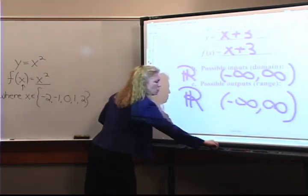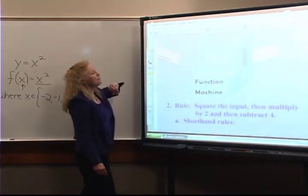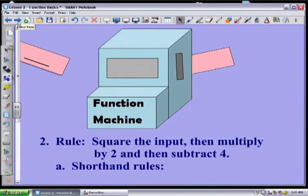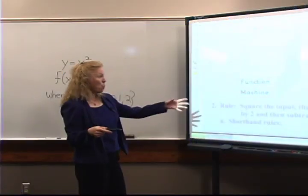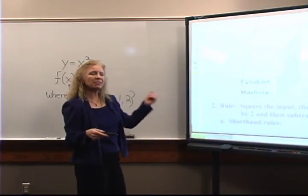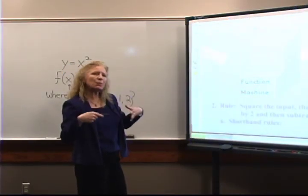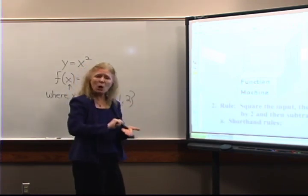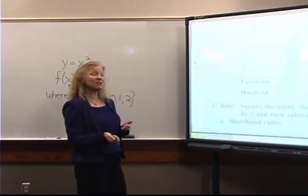Let's go on to another function machine. In this case we want to square the input, then multiply by two, and then subtract four. Anytime you get hung up in math trying to figure out what's going on, take a number and see what happens to it — a lot of times that will help you figure out what to do with a variable.